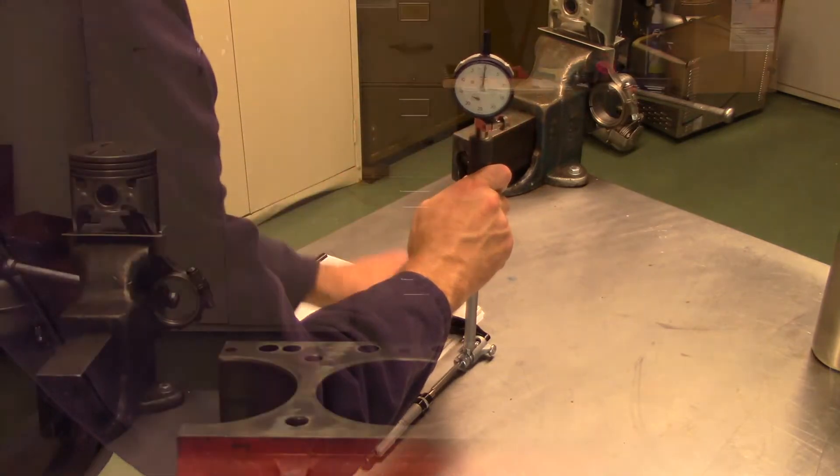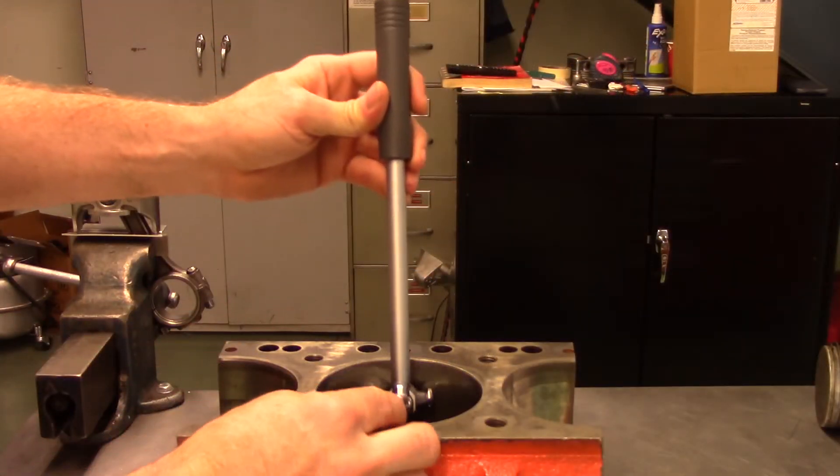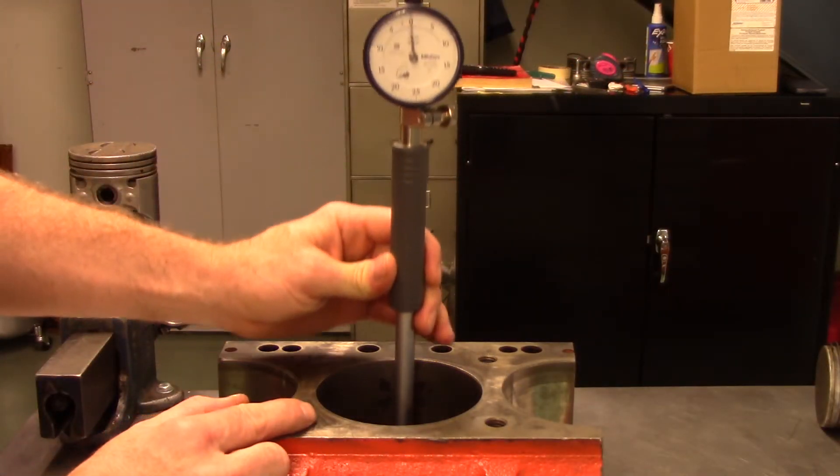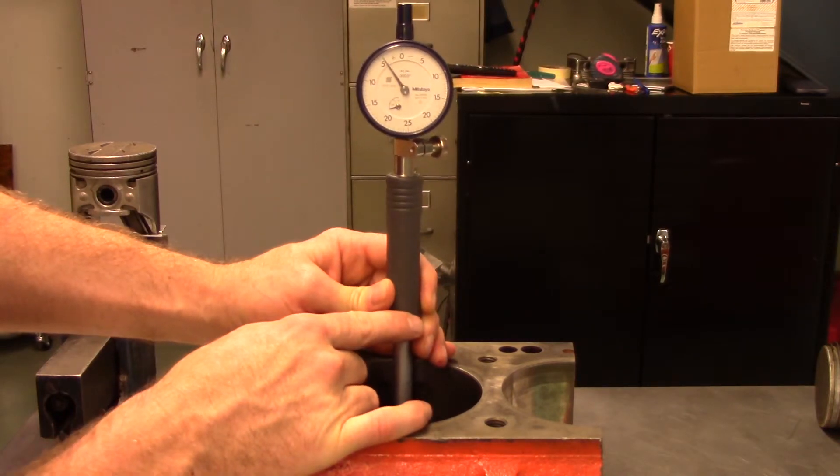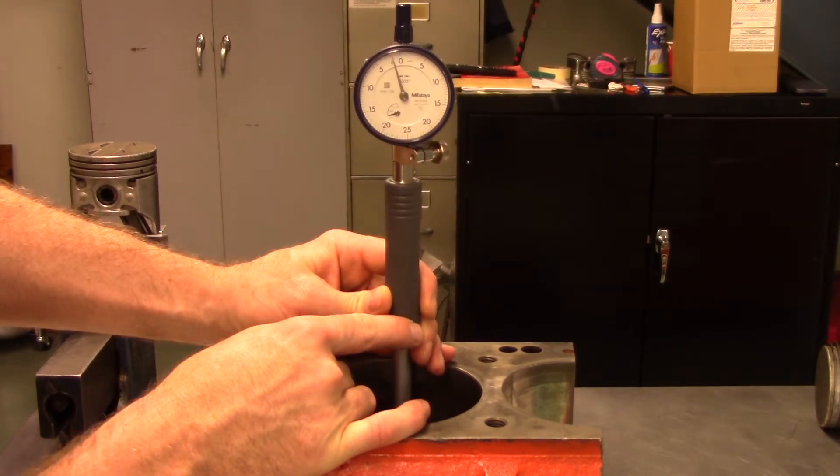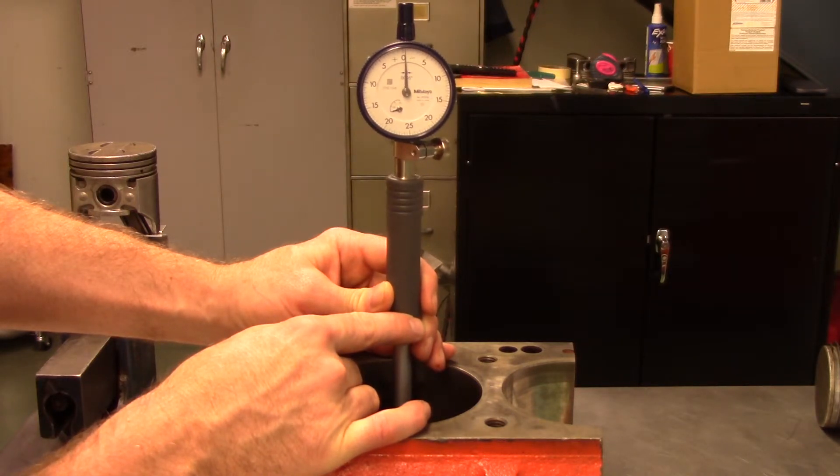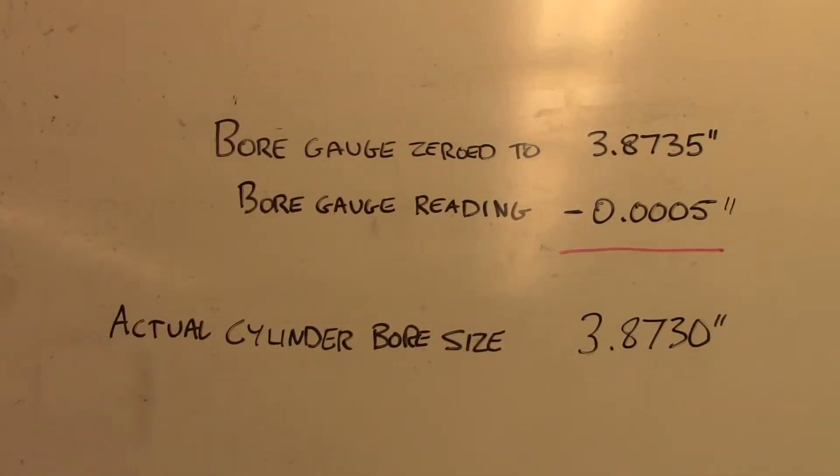Once zeroed, use the bore gauge to measure the size of the bore at a point just below ring travel at the bottom dead center position of the cylinder. The reading on the gauge is negative five ten-thousandths of an inch. To calculate true bore size, take the size we zeroed the bore gauge to, 3.8735 inches, and subtract the five ten-thousandths of an inch to give us a final bore size of 3.8730 inches.